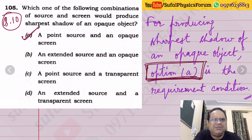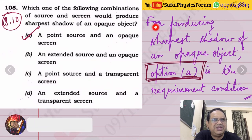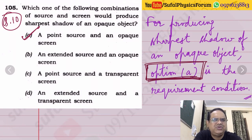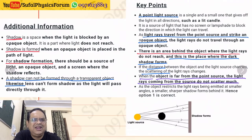Question number 10: Which combination of source and screen would produce the sharpest shadow of an opaque object? Options are: point source and an extended screen, extended source and an opaque screen, point source and a transparent screen. For producing the sharpest shadow of an opaque object, option A is the required condition: point source and an opaque screen.